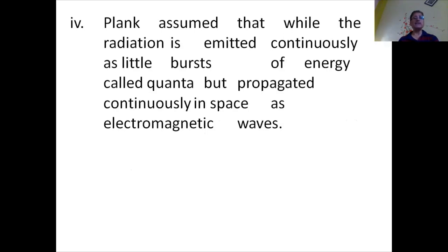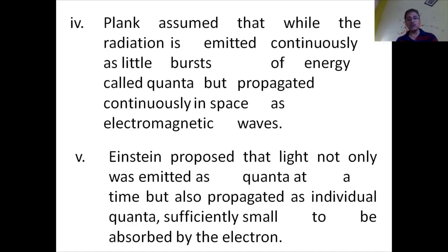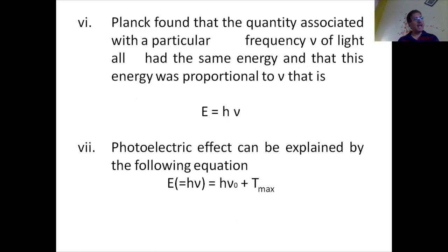Planck had assumed that radiation is emitted in little bursts of energy called quanta, but propagated continuously in space as electromagnetic waves. Einstein agreed on the emission part but further proposed that light not only is emitted as quanta but also propagates as individual quanta, sufficiently small to be absorbed by electrons. Planck found that quanta associated with a particular frequency nu of light all had the same energy proportional to nu, that is E equals h nu, where h is Planck's constant.